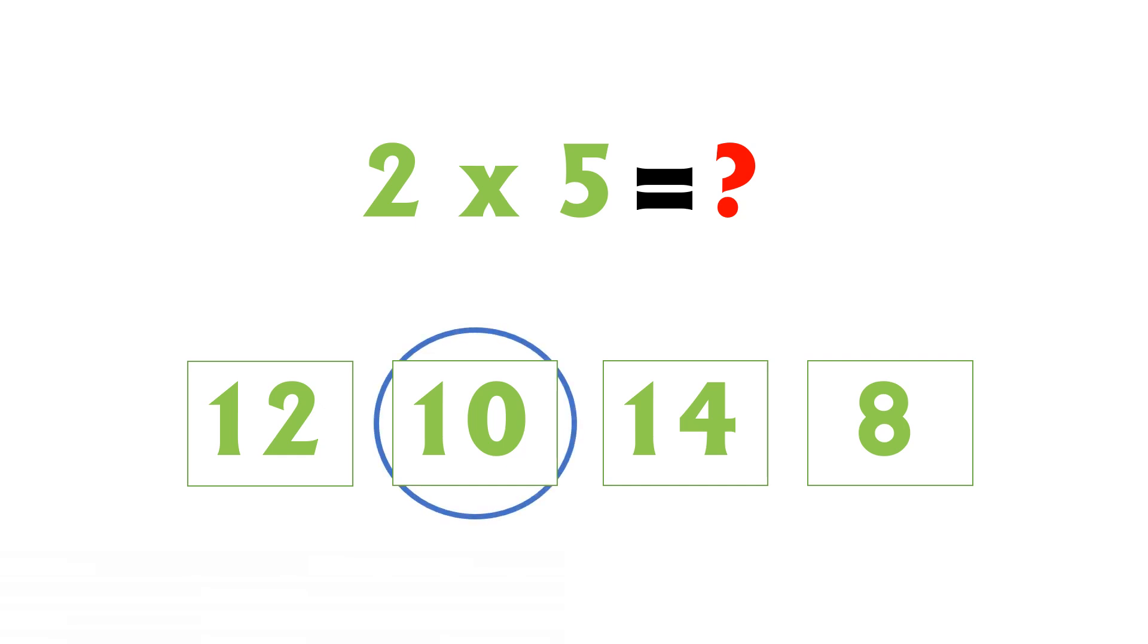2 fives are 10. 3 times 7... the options we have 12, 15, 21, and 18. The correct answer is